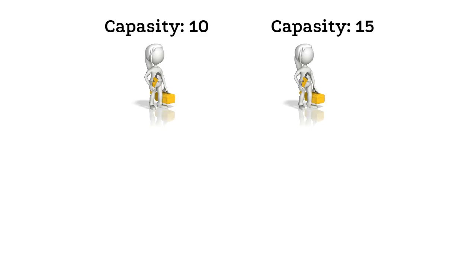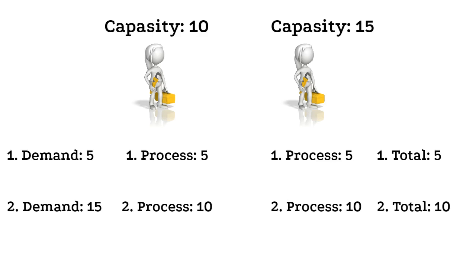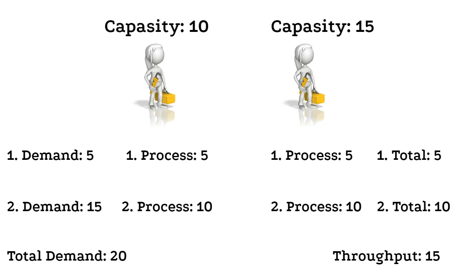Consider an event with a processing capacity of 10 items. If a fluctuation results in only 5 items, the event processes them and passes them to a second event that can handle 15 items but will only process 5. However, if the fluctuation causes the first event to receive 15 items, it will only process 10 and pass those 10 to the second event. We might assume the 15 items would offset the first 5, resulting in a throughput of 20 items, but this is not the case — negative fluctuations within the system accumulate.